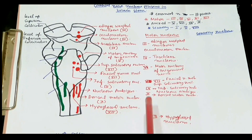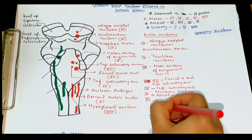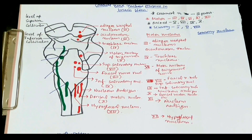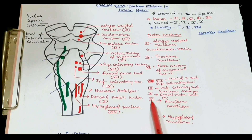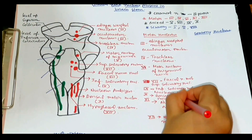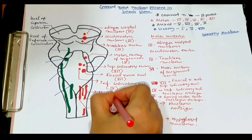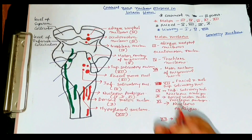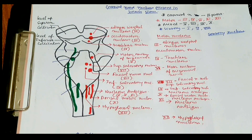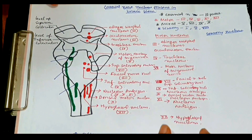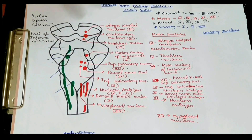Number eleven is remaining. The motor nucleus of cranial nerve eleven is also nucleus ambiguus. So nucleus ambiguus is the motor nucleus of cranial nerves nine, ten, and eleven. These are all the motor nuclei of cranial nerves present in the brainstem.